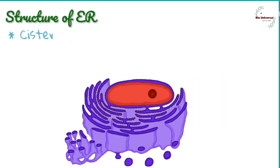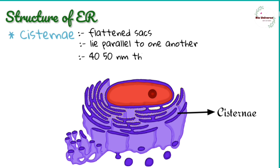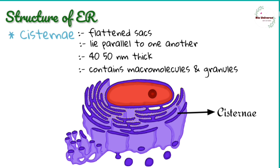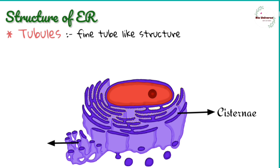Cisternae: they are flattened sacs of the endoplasmic reticulum which lie parallel to one another like a stack. They are 40 to 50 nanometers thick and contain abundant macromolecules and small granules within the endoplasmic reticulum matrix.